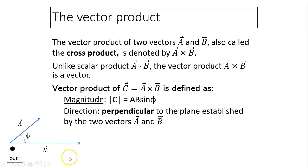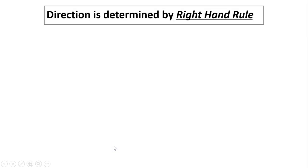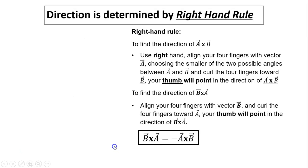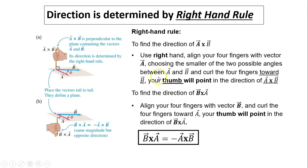There are two possible perpendicular directions — either coming out or going into the screen. To determine which one, we use the right-hand rule. To find the direction of a cross b: use your right hand, align your four fingers with vector a, choose the smaller of the two possible angles between a and b, and curl the four fingers toward b. Your thumb will point in the direction of a cross b.